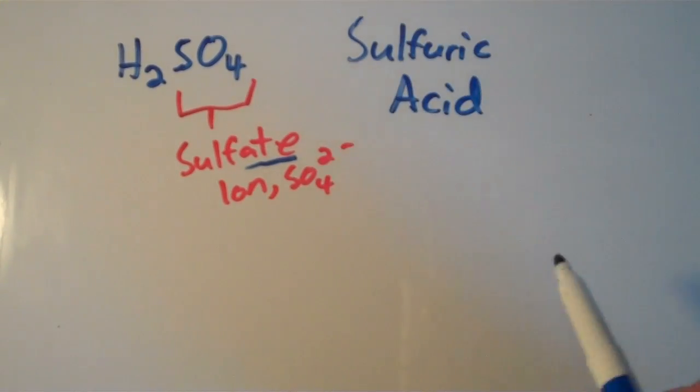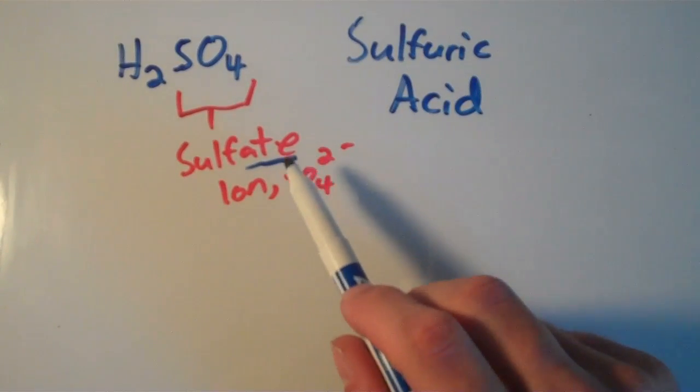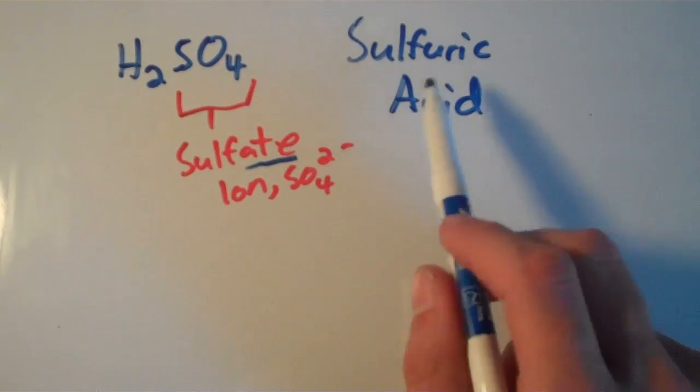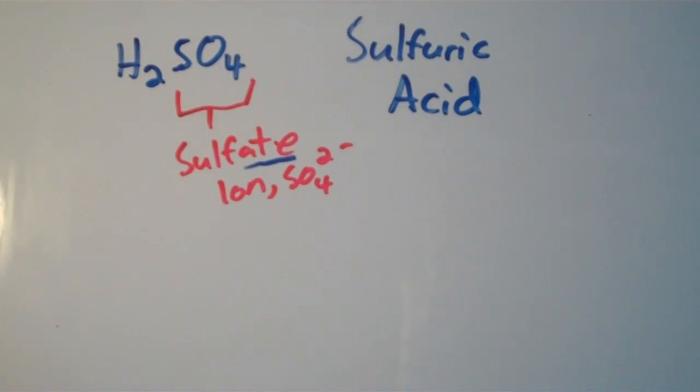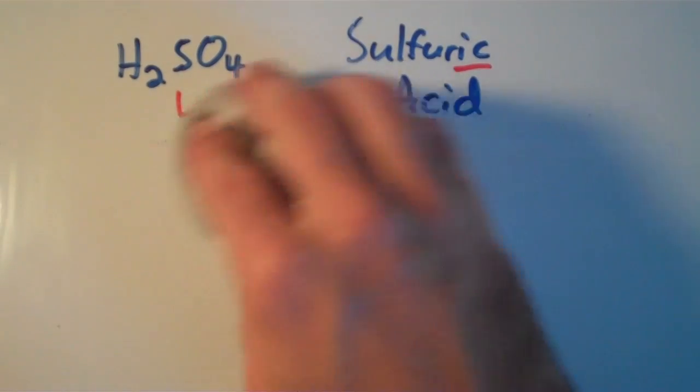So if the oxyanion ends with -ate, we use -ic. 8 goes with -ic. So let's do another one.